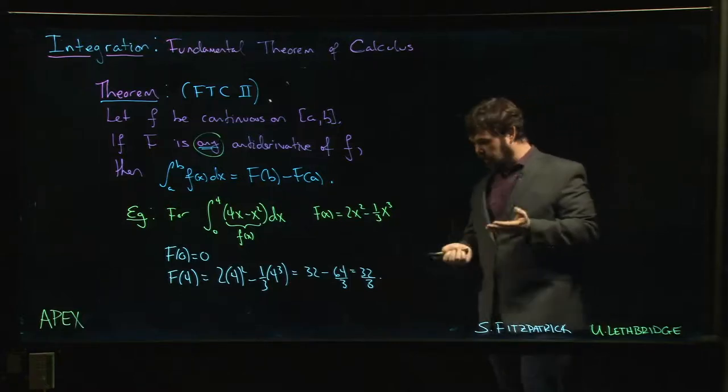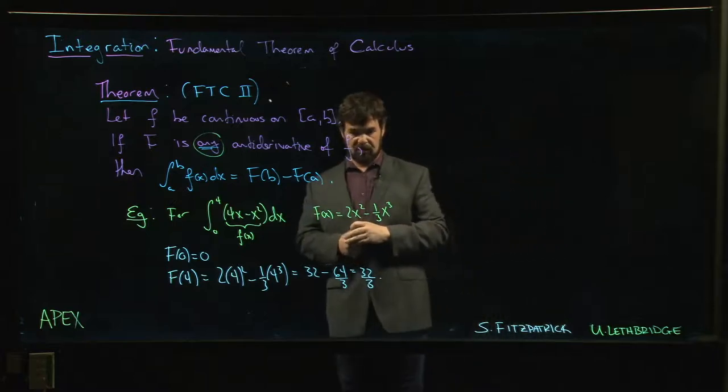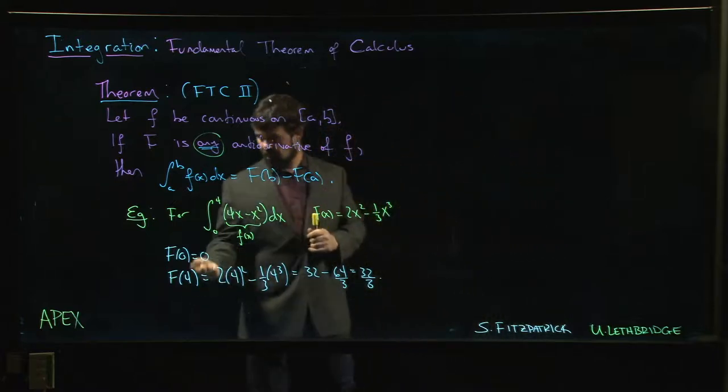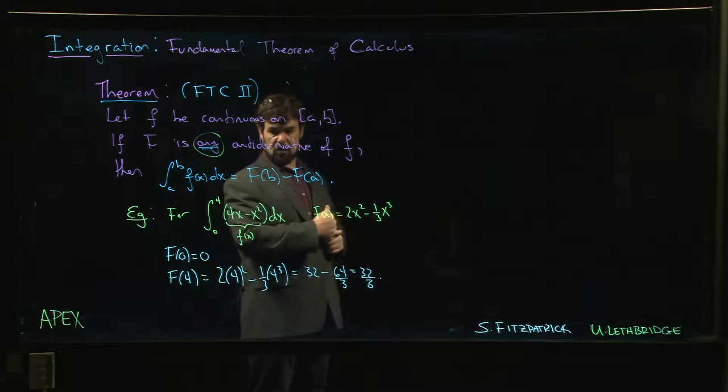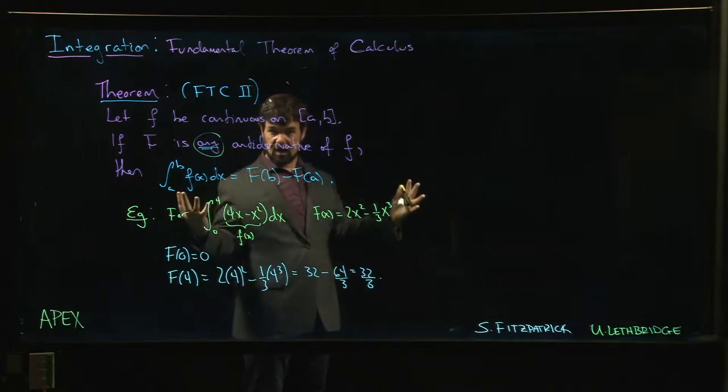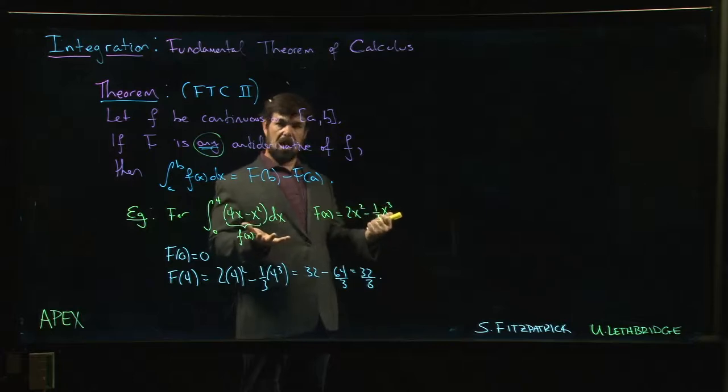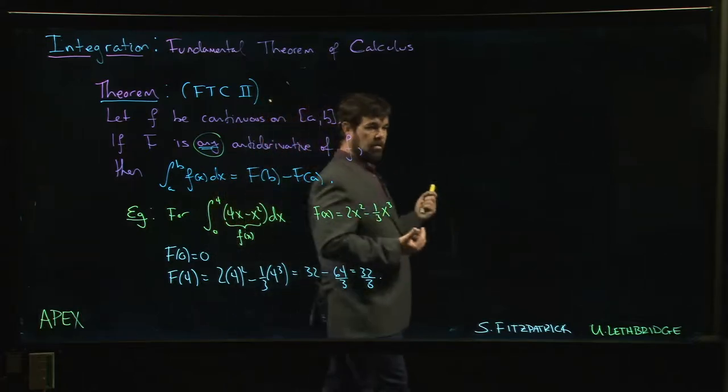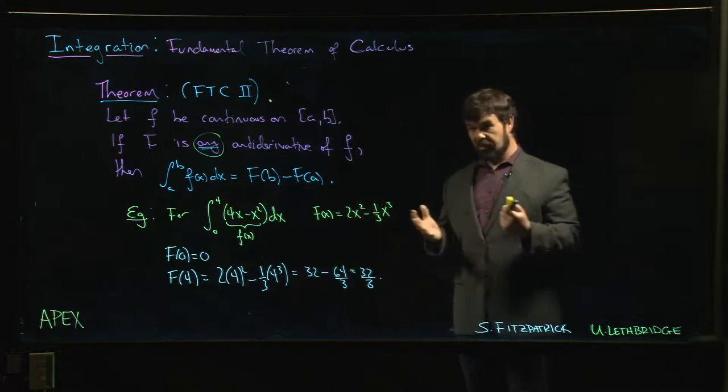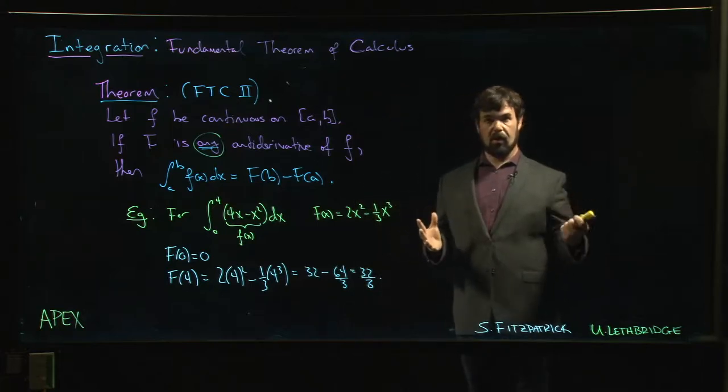And that's a whole lot less work than using Riemann sums, right? F of 4 minus F of 0 gives us 32 over 3, gives us the answer, and we have it straightaway. That's the power of the second part of the fundamental theorem of calculus. We can now very quickly evaluate definite integrals as long as we can come up with an antiderivative.